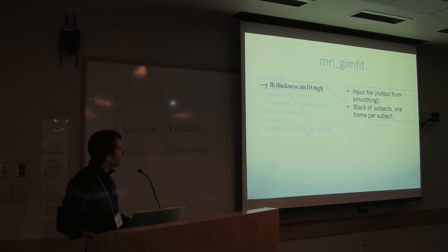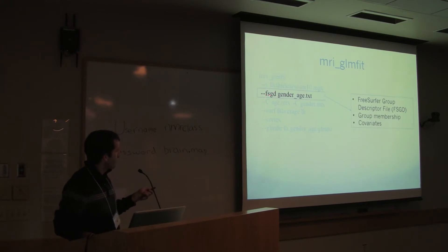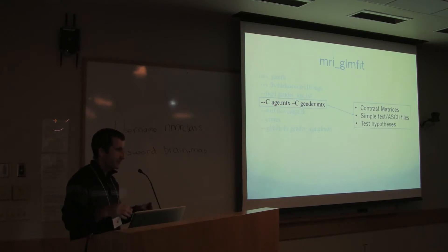Then this would be fsgd, the FreeSurfer group descriptor file, which is where it gets the design matrix from. These are the contrasts. We can have more than one. Like I said, age MTX and the gender MTX. It's just text files that say 0011, that's it, or whatever it is.